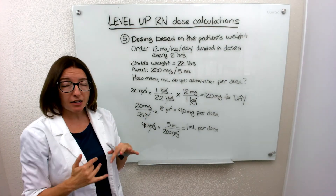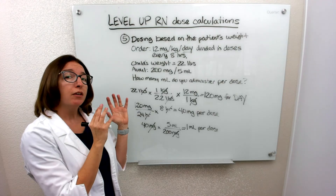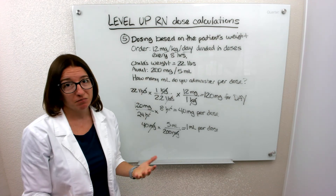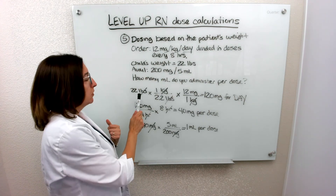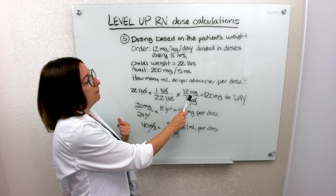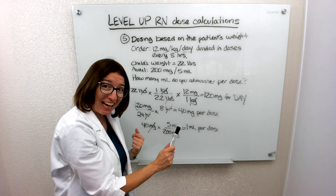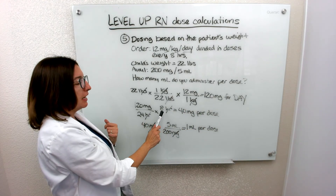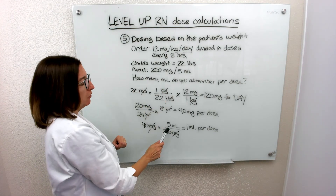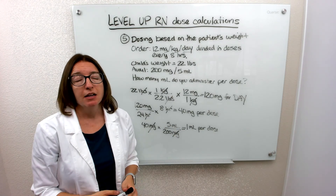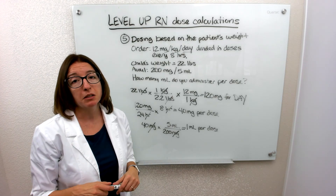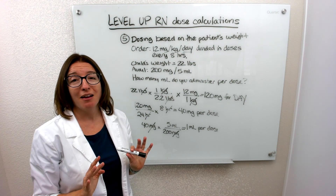I know it's a lot of different steps — we're really just trying to go with the units of measure we're given and work our way toward what's ordered to answer the question. To review: we took the child's weight and converted it to kilograms, then found how many milligrams they needed for the day, then divided by the dosing interval to find the per-dose amount, and finally used the available concentration to find the milliliters. That is problem five, probably the hardest one today, but we've got a few more to go through.